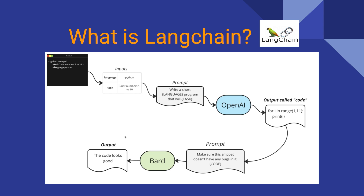For example, in Python the task is to print numbers 1 to 10; in JavaScript it is also print 1 to 10; in C# it is print 1 to 10. You can also use the OpenAI API to generate code snippets like this.